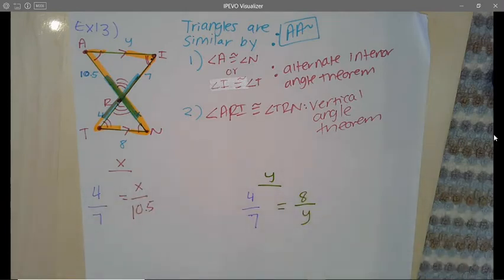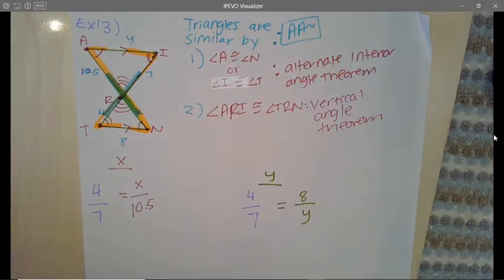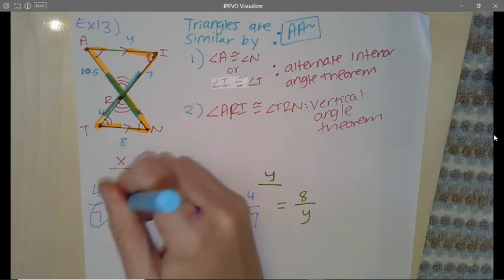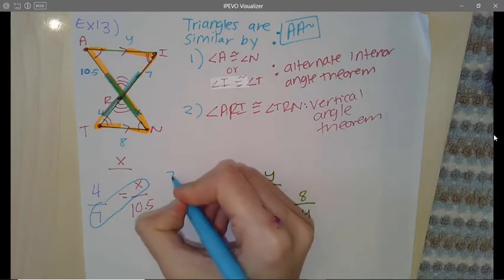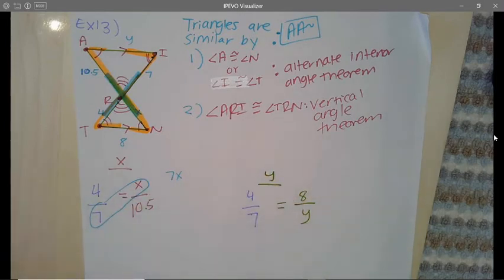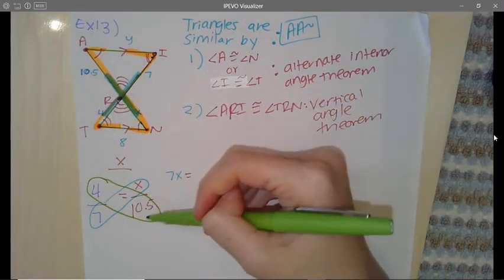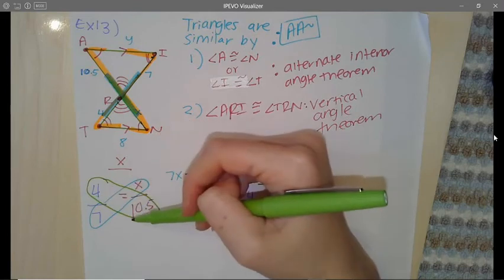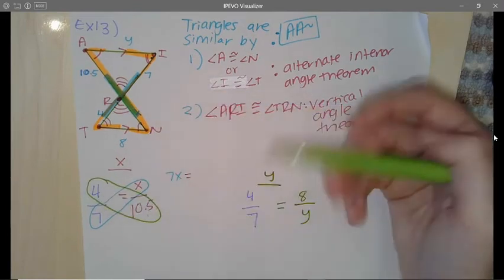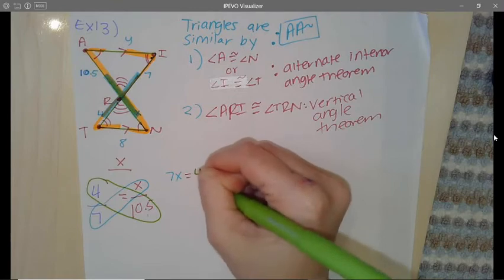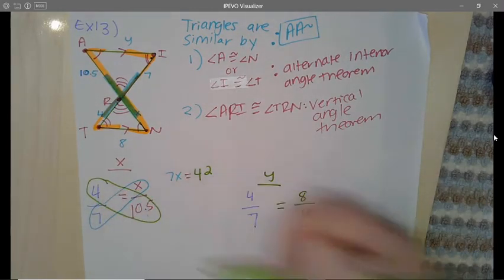We can start solving. How do we solve a proportion? We do in fact cross multiply. So 7 times X will give me 7X, and that will equal 4 times 10.5. 4 times 10 is 40, and then half of 4 is 2, so 40 plus 2 is 42.